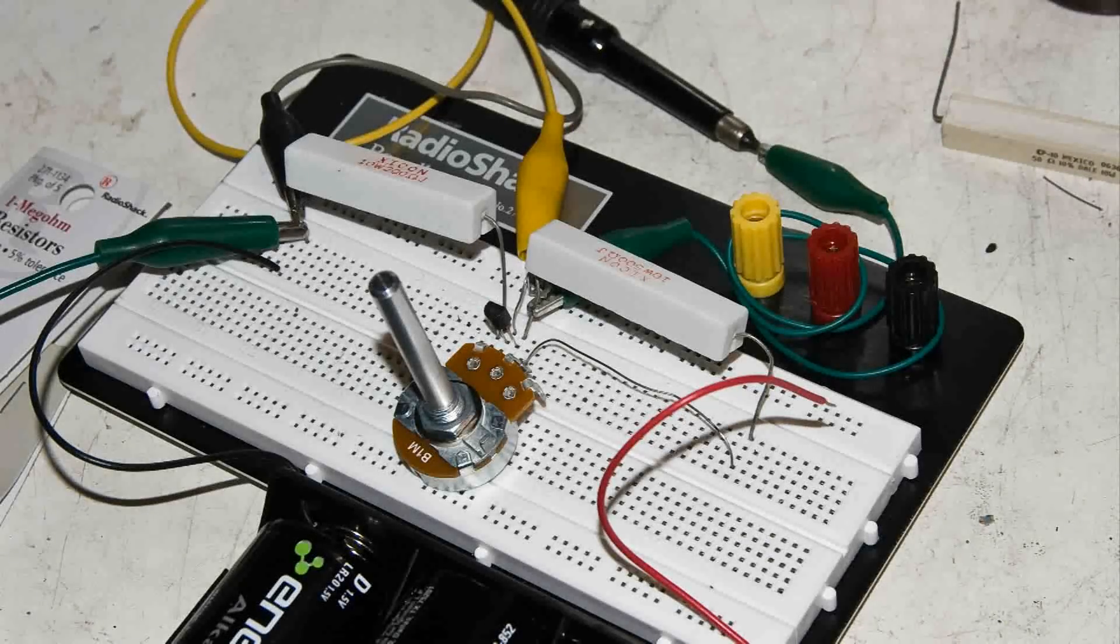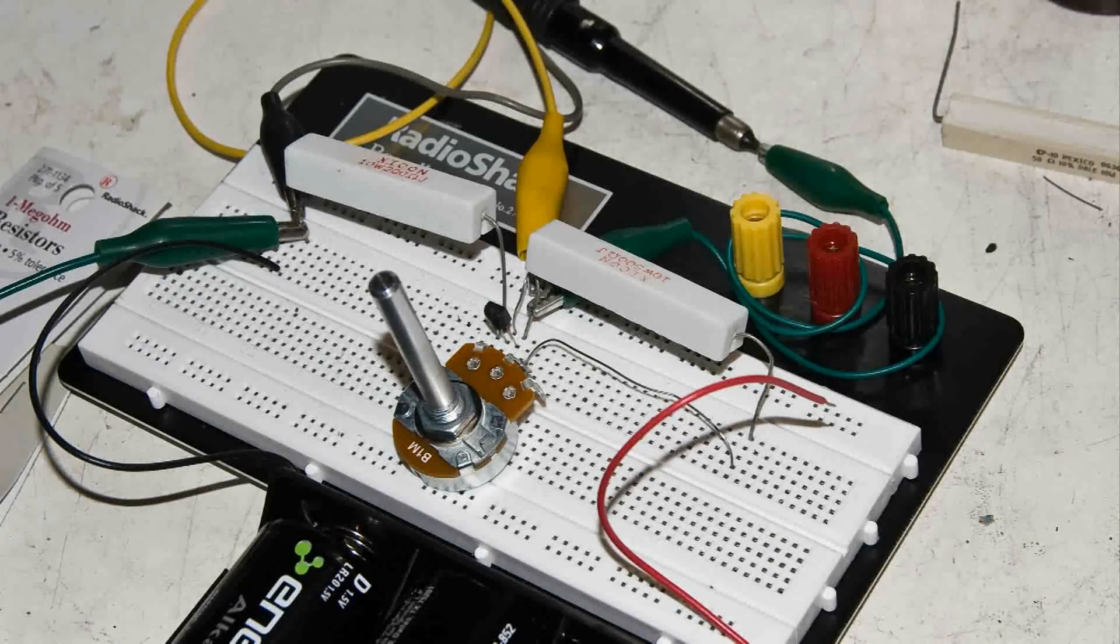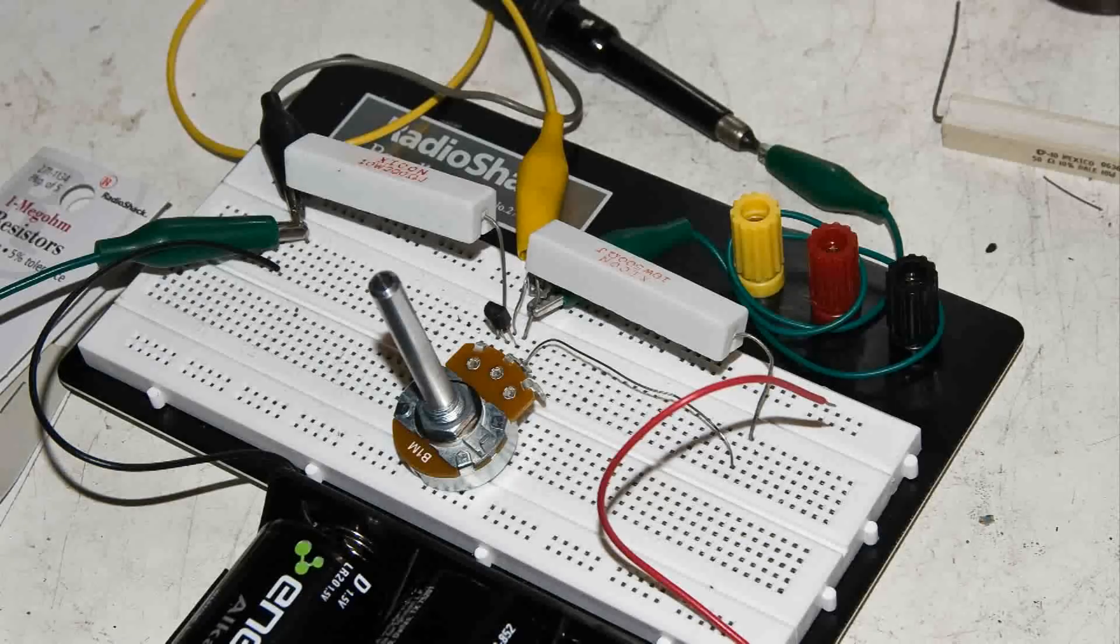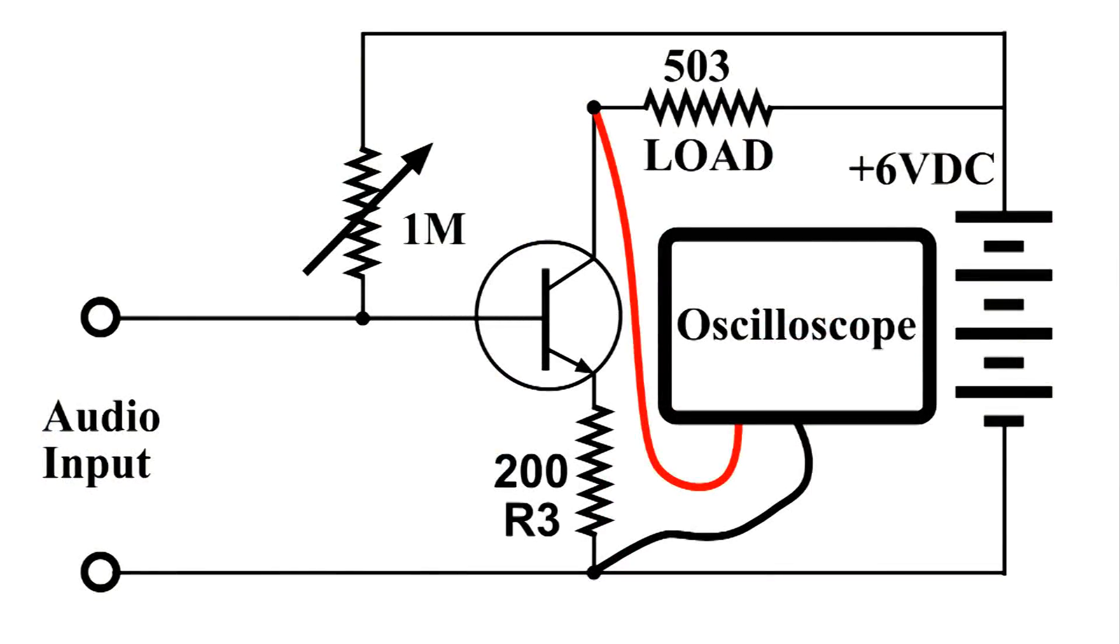Here is my next setup. I have changed the configuration just a little. And here is the wiring diagram. This time I'm going to have a scope and an audio input. What I'm going to do is plug each transistor into this circuit and we'll see what it looks like on the scope. I'm going to start with the higher beta of 325.44.